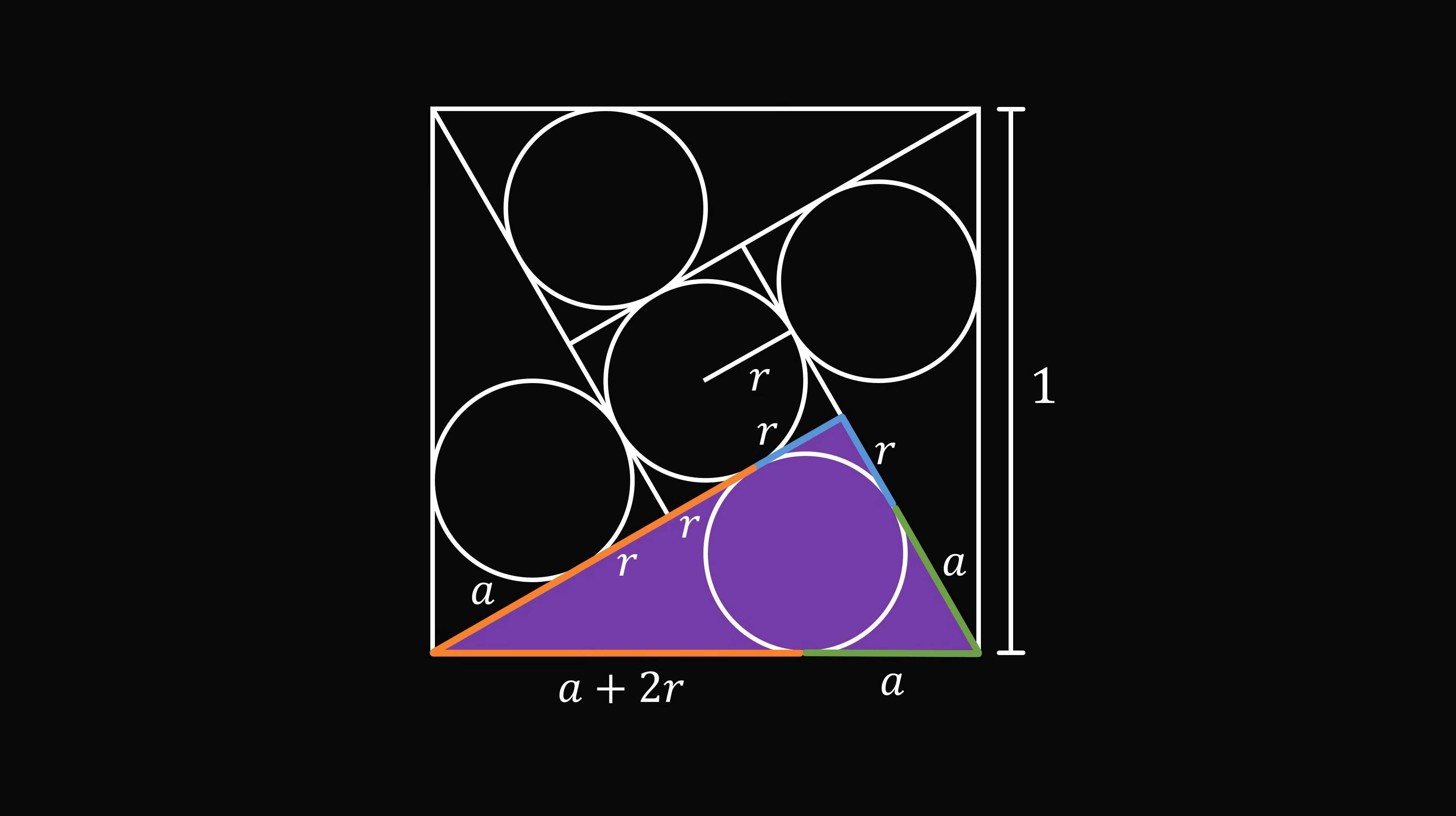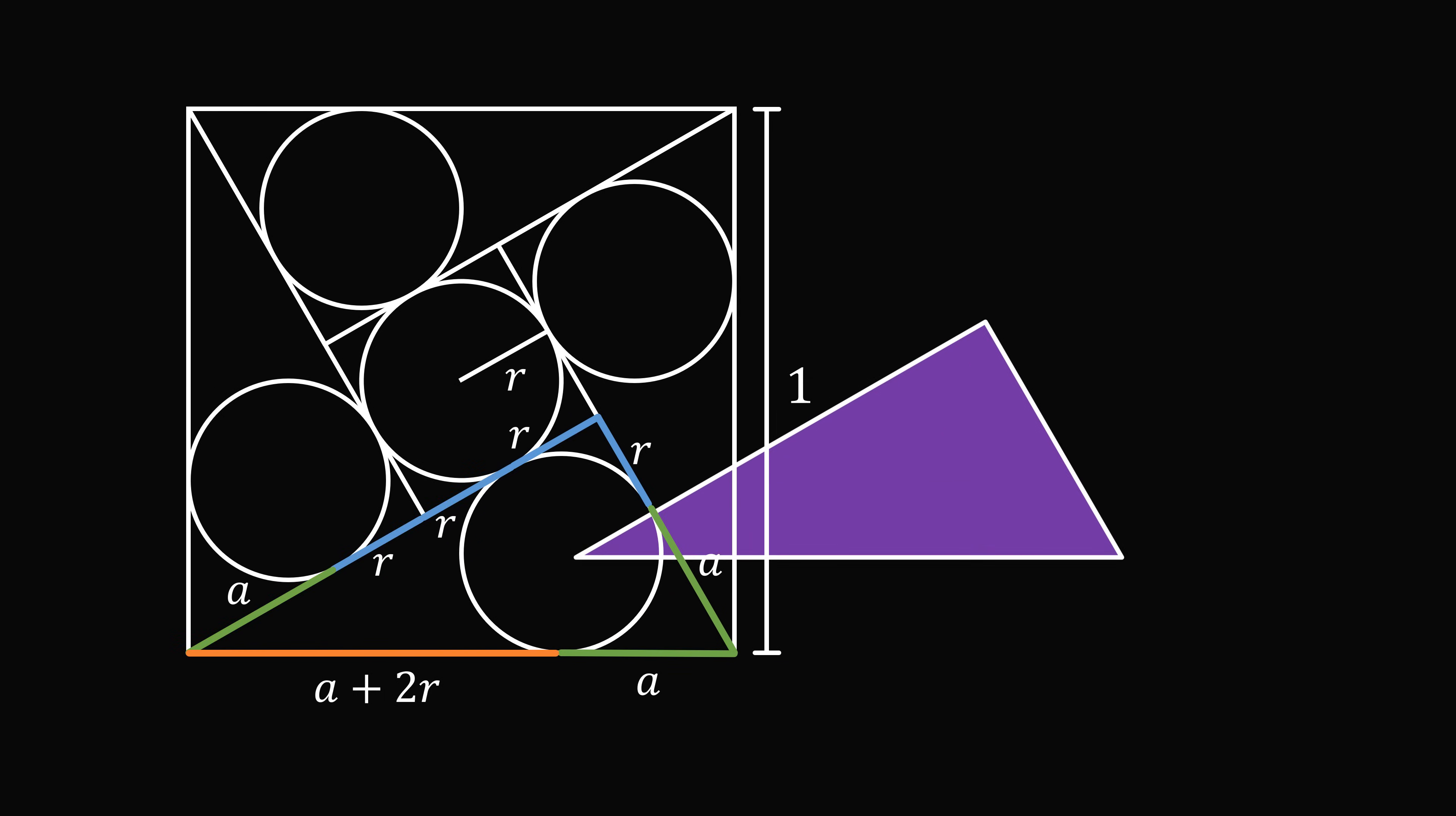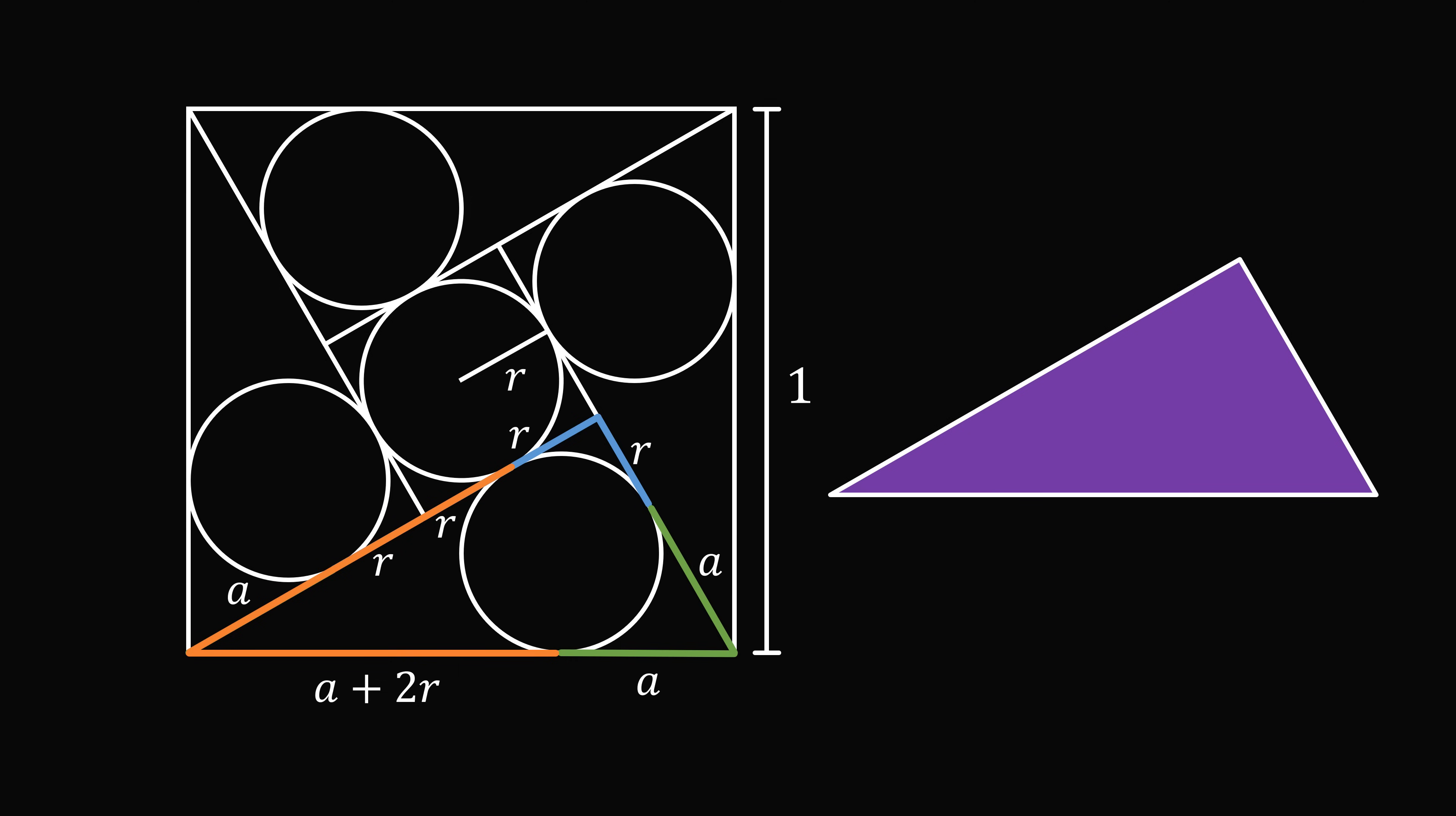So let me just isolate this triangle, and let me put in the side lengths. The short side is a plus r, and the hypotenuse is 2a plus 2r, because we have a plus 2r plus a. Now, we can factor this as equal to 2 multiplied by a plus r. But we know a plus r is the side length of the short side. So we have a right triangle, where the hypotenuse is twice the length of the short leg.